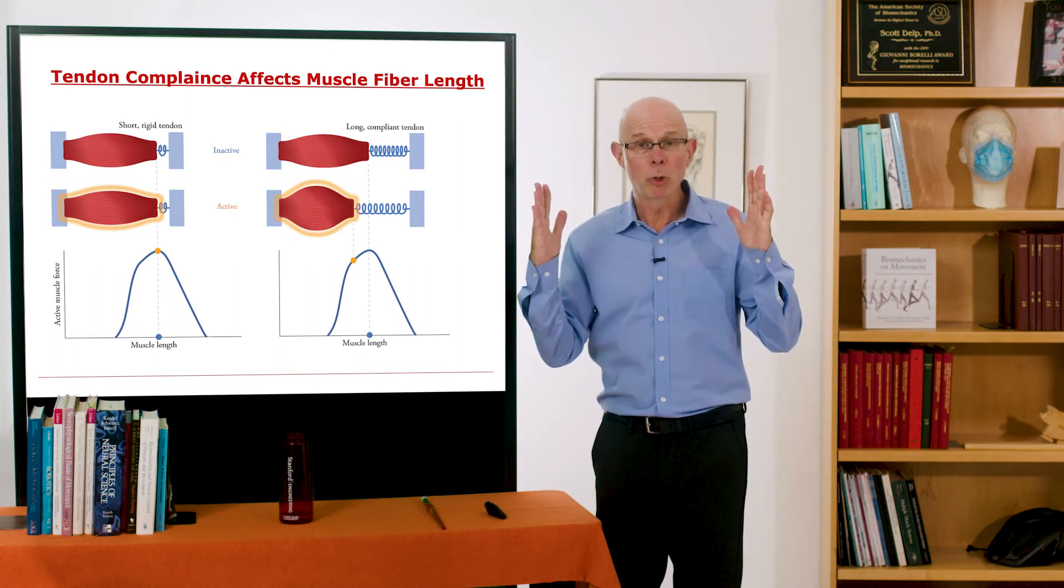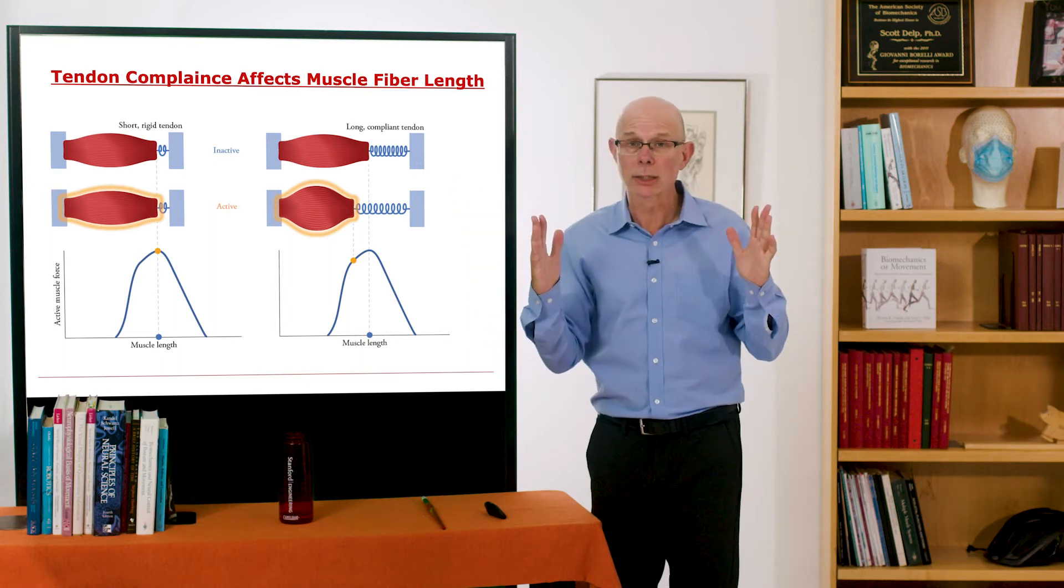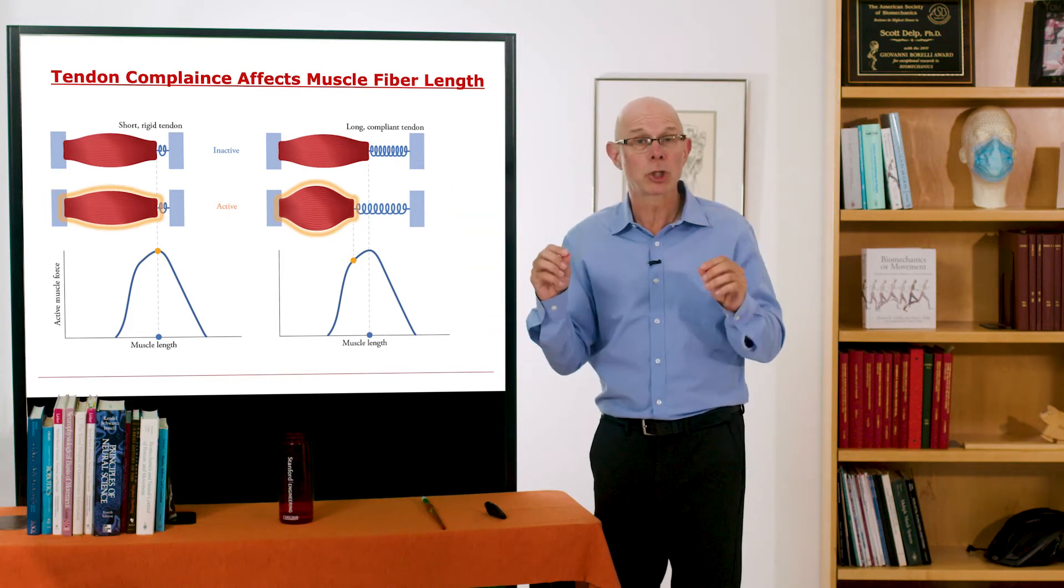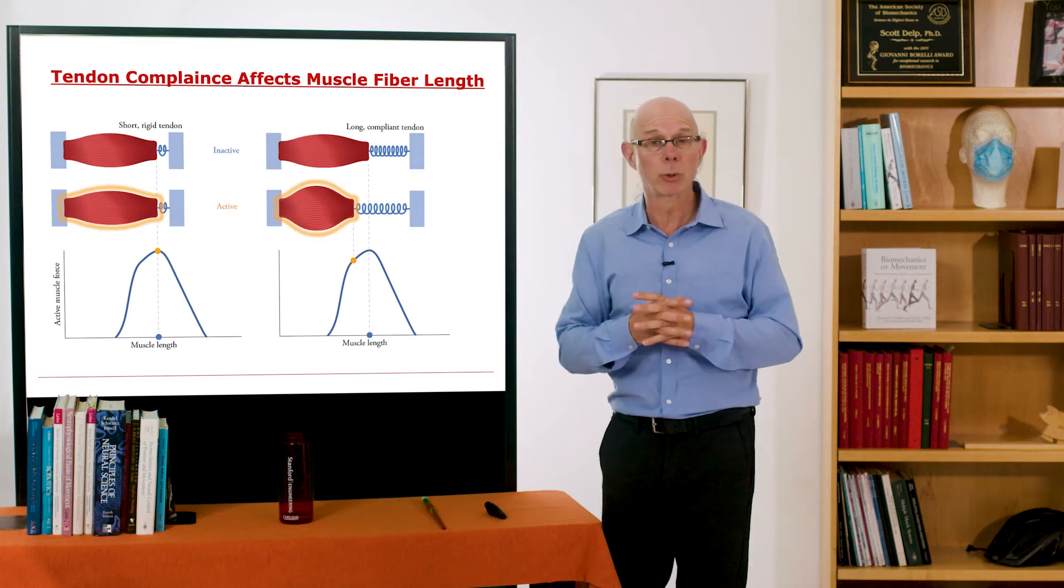So that's the isometric conditions where the muscle-tendon length is held constant. But remember, during movement, the muscle-tendon length is going to be almost constantly changing. And force will be changing. So the tendon stretch will be changing.